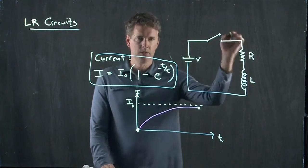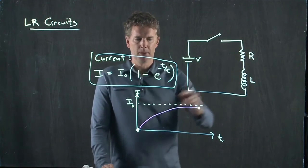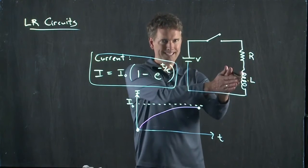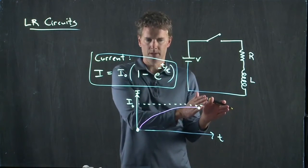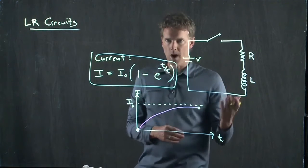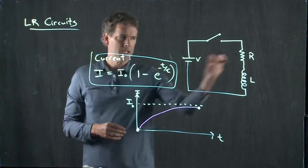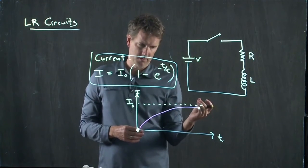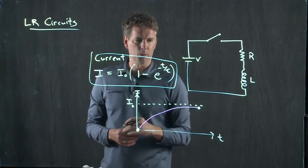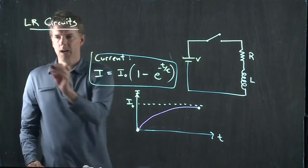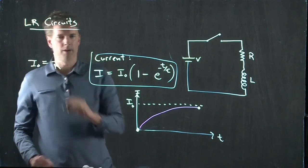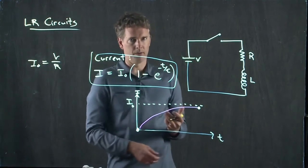That has to be related to the resistor. Because after a long time where the current is steady, the inductor doesn't do anything anymore. Okay? It's just going to act like a wire. Remember, inductors only are resisting changes in current. Okay? So eventually, it's just going to look like a wire. So I naught is just going to be V over R. Good old Ohm's law.